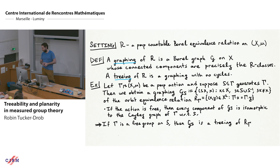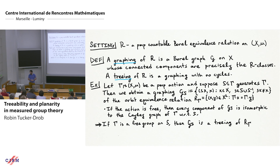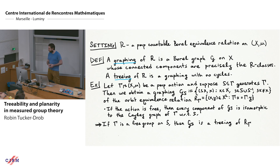We also require the two points are not equal to avoid loops. Since S generates Γ, the connected components are precisely the orbits. The orbit equivalence relation R_Γ is the relation of two points being equivalent if they belong to the same orbit. If the original group action is free, every connected component of G_S is isomorphic to the Cayley graph of Γ with respect to S. If you start with a free group freely generated by S, then G_S is a treeing.